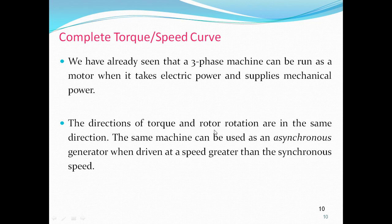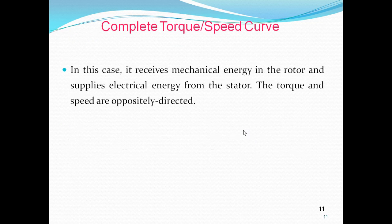When working as a generator, the direction of torque and rotor rotation are in the same direction. The machine receives mechanical energy in the rotor and supplies electrical energy from the stator. The torque and speed are oppositely directed.